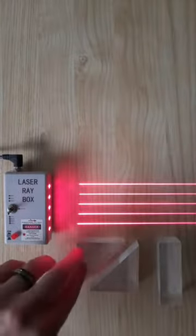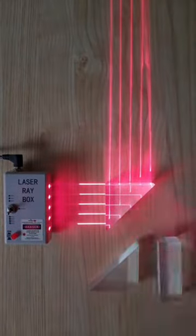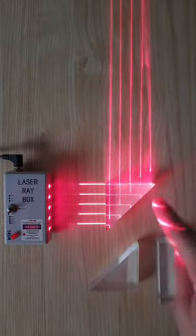But then, if you have a prism, so like a triangle-looking piece of glass like this, if you move it in front of the light, instead of traveling through, it completely reflects off of this surface.